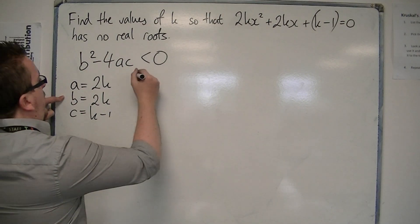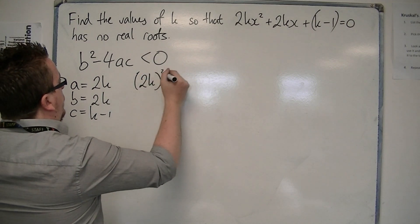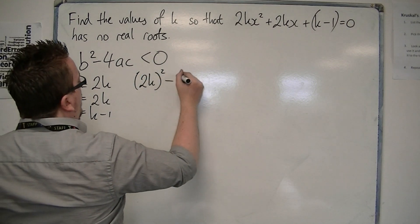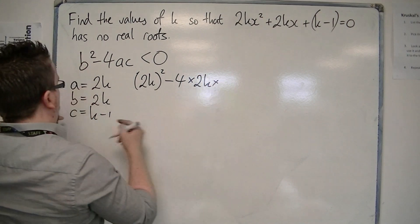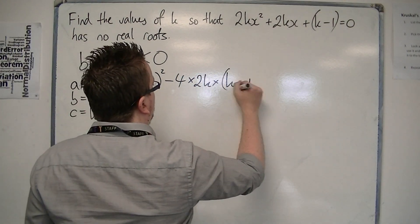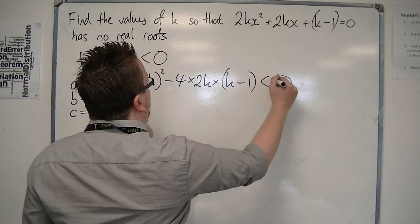We have b², so that's 2k all squared, take away 4 lots of 2k times (k - 1). And that's got to be less than 0.